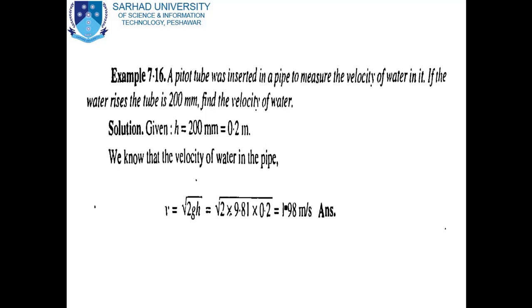Now we will solve an example on Pitot tubes. A Pitot tube was inserted in a pipe to measure the velocity of water. If the water rises in the tube up to 200 mm, find the velocity of water.